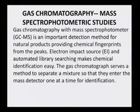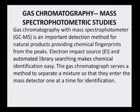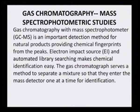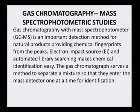Gas chromatography can be used alone or combined with mass spectrometric studies. GC-MS is an important detection method for natural products, providing chemical fingerprints. Electron impact source (EI) and automated library searching makes chemical identification very easy. The gas chromatography serves to separate a mixture so that components enter the mass detector one at a time for identification — the chromatography separates them and the mass detector then detects them, finding out whether the fragmentation pattern matches a known or unknown compound using library research.